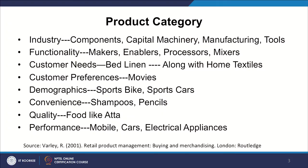Now I will take you towards product category. In the industrial sector, for example, we have a category called components, a category called capital machinery, manufacturing machine category, or tools category. From a functionality perspective, we can say mixers and grinders, processors, enablers — these kinds of categories — and then you can fit in any product you can imagine.